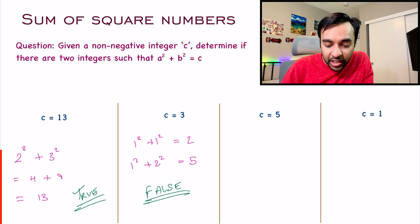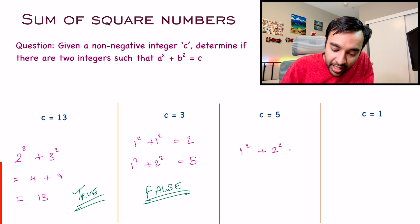Similarly, you have some more test cases. When c equals 5, you can do 1² + 2², and that becomes 5. So for the third test case also, you return true as your answer.